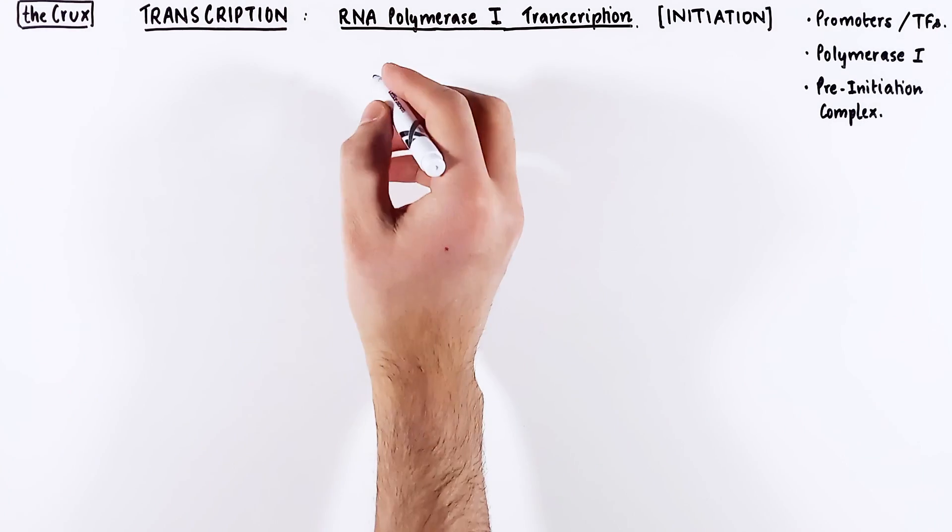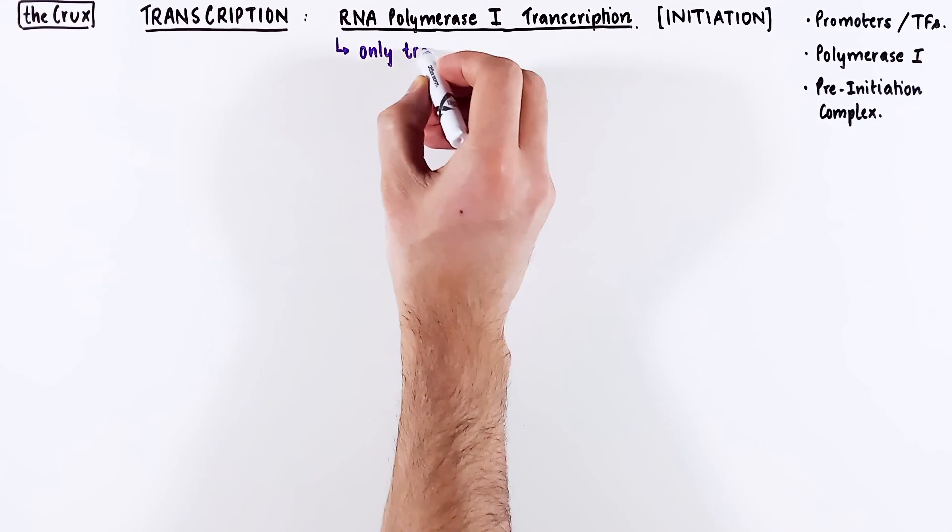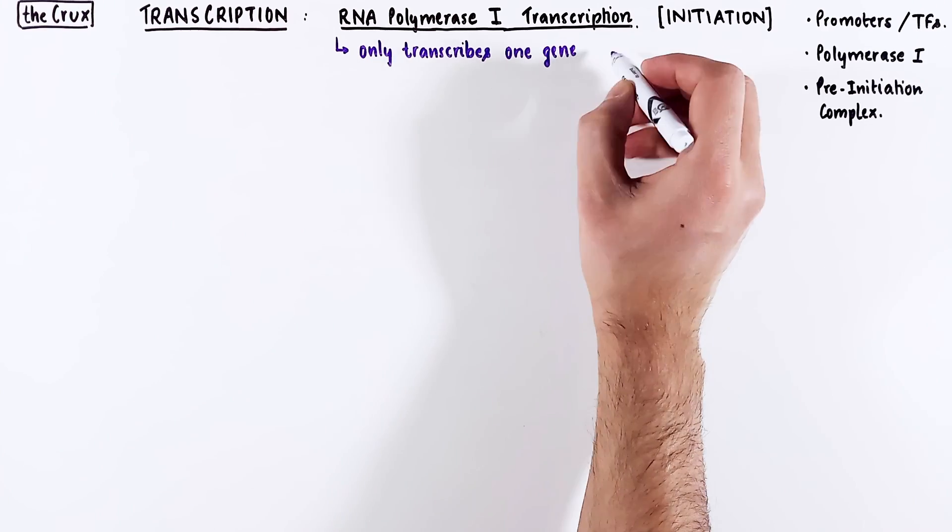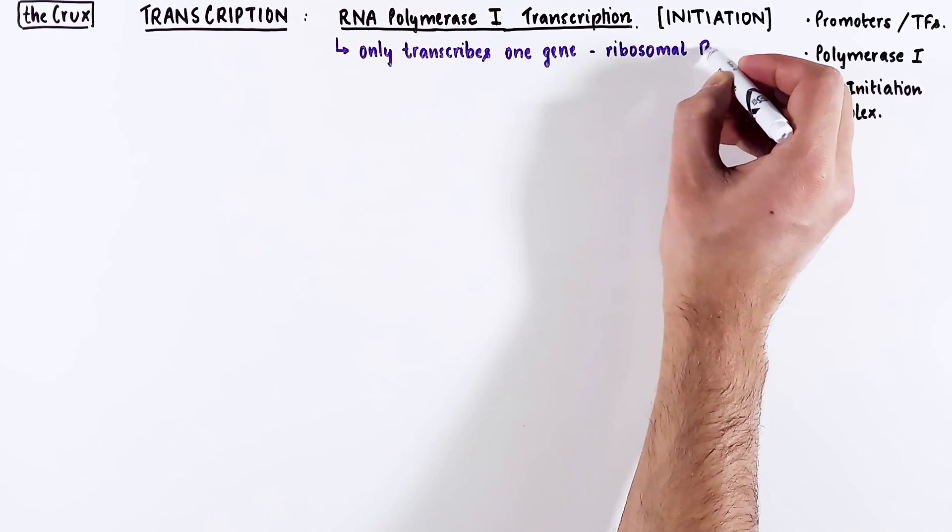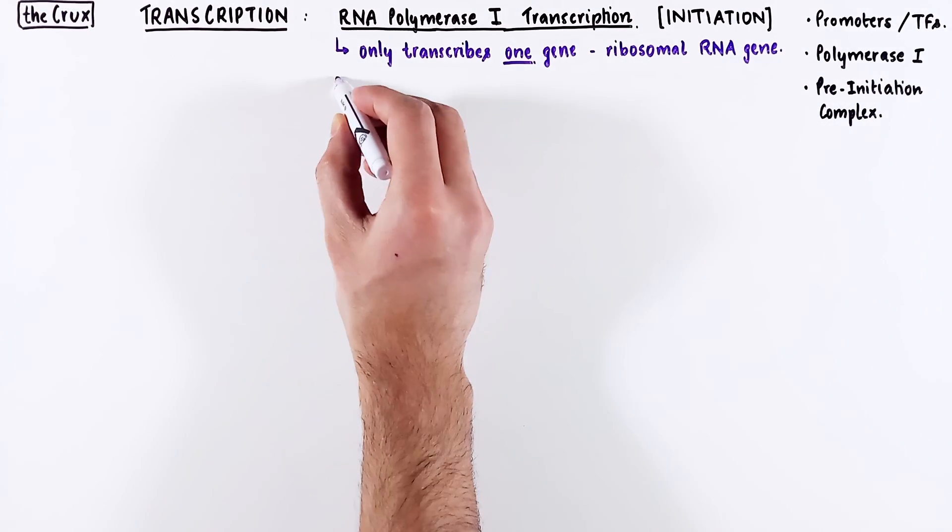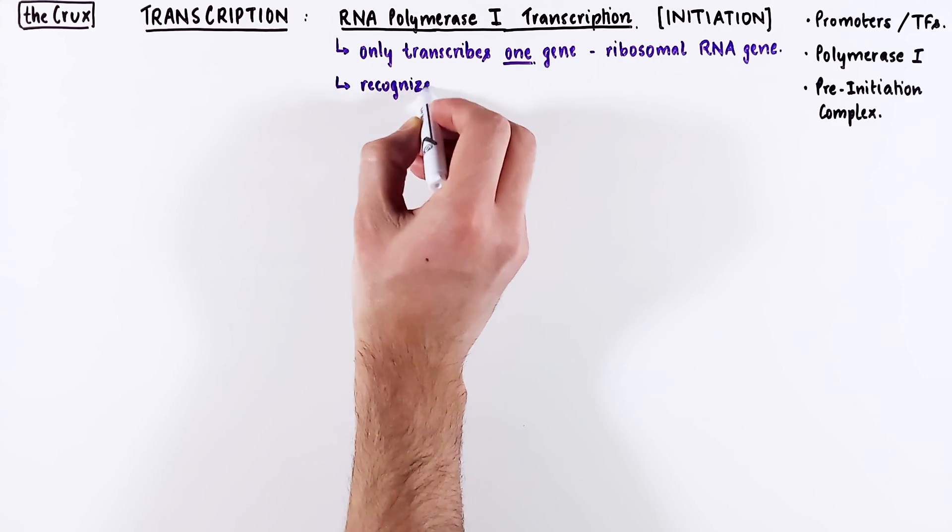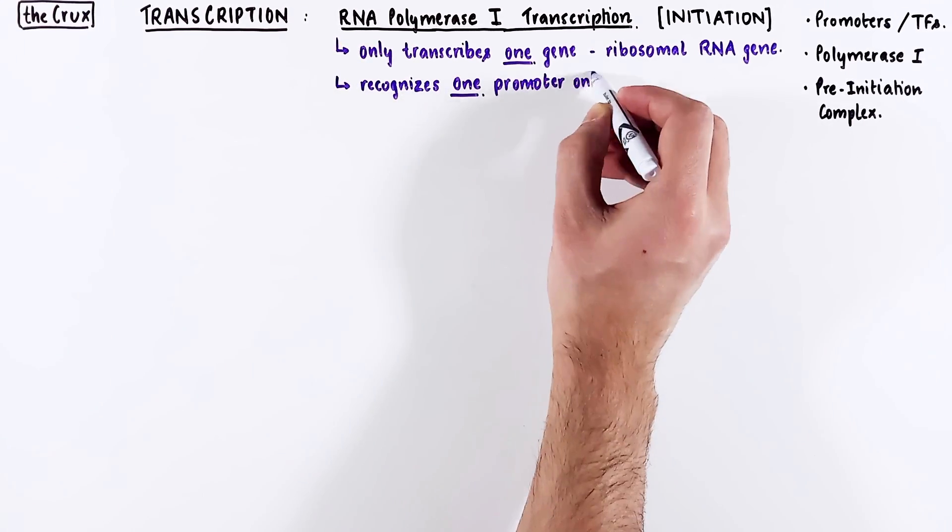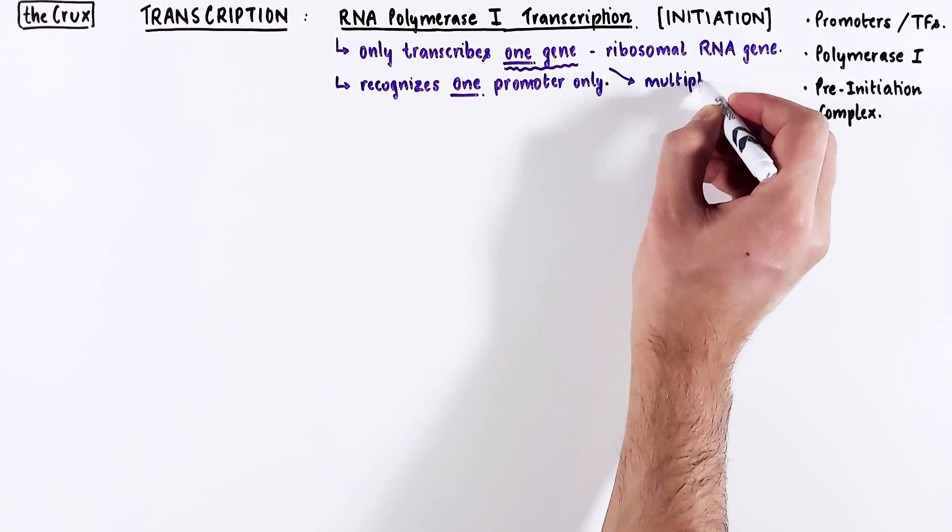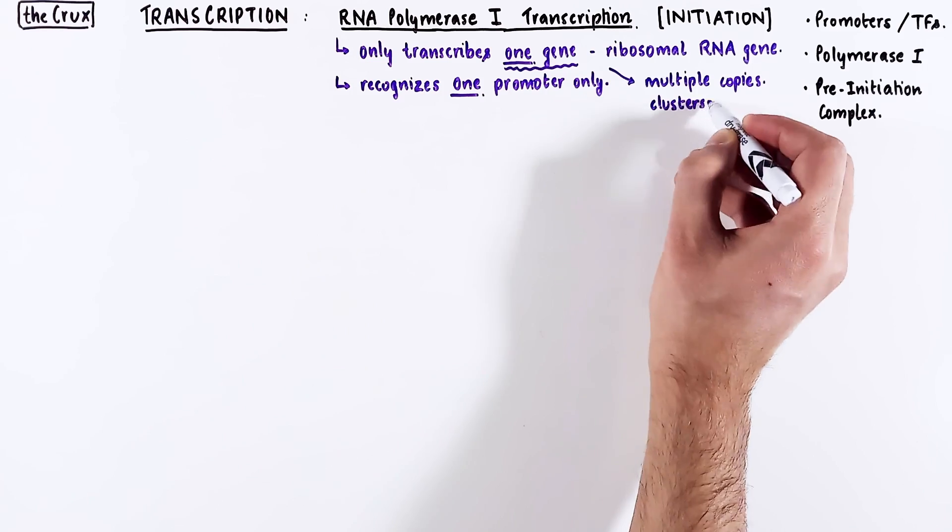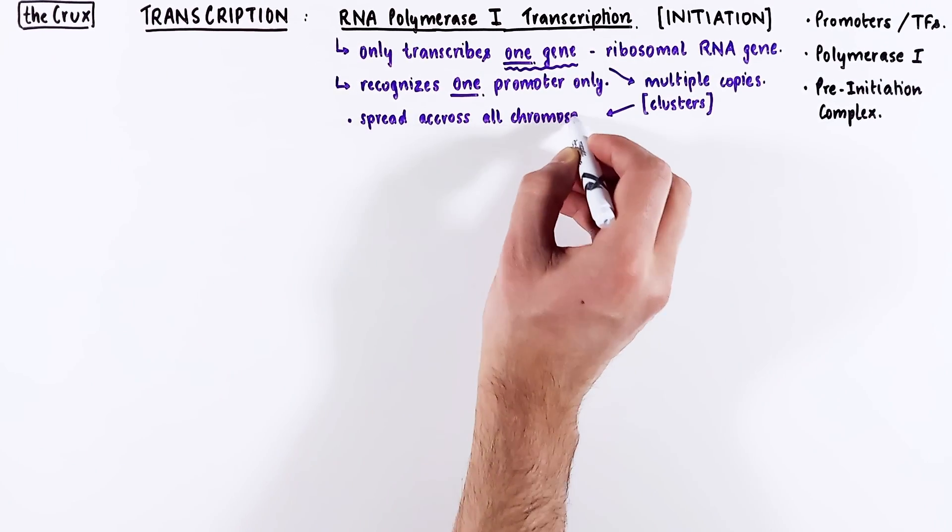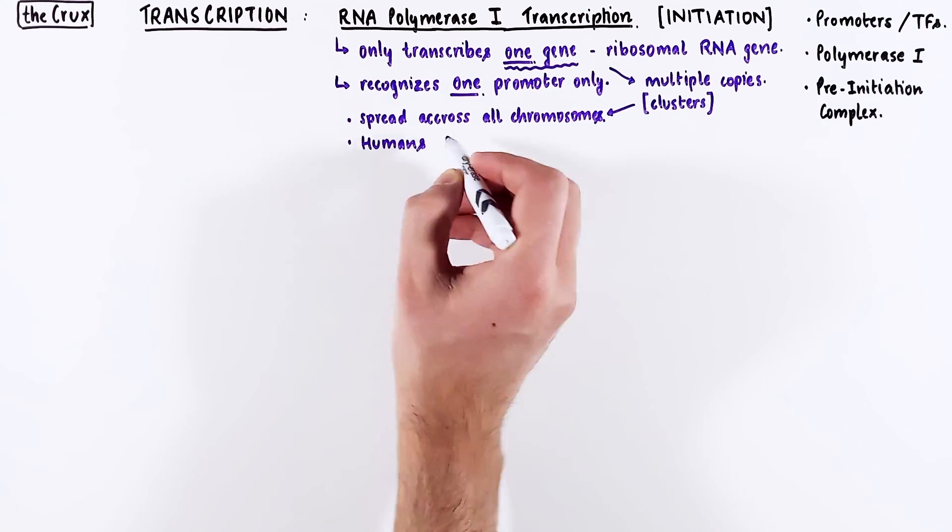The RNA polymerase I transcription is actually very unique in that this polymerase transcribes only one gene, the ribosomal RNA gene. This one gene means that RNA polymerase I recognizes one type of promoter only, but this one gene is actually present in multiple copies. Sometimes they even appear in clusters and these copies are found on almost all chromosomes. Humans have about 400 copies of the ribosomal RNA genes.